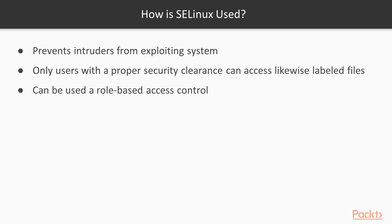There are three ways in which SE-Linux can be used. It can help prevent intruders from exploiting a system. It can be used to ensure that only users with the proper security clearance can access files that are labeled with a security classification. In addition to MAC, SE-Linux can also be used as a type of role-based access control.